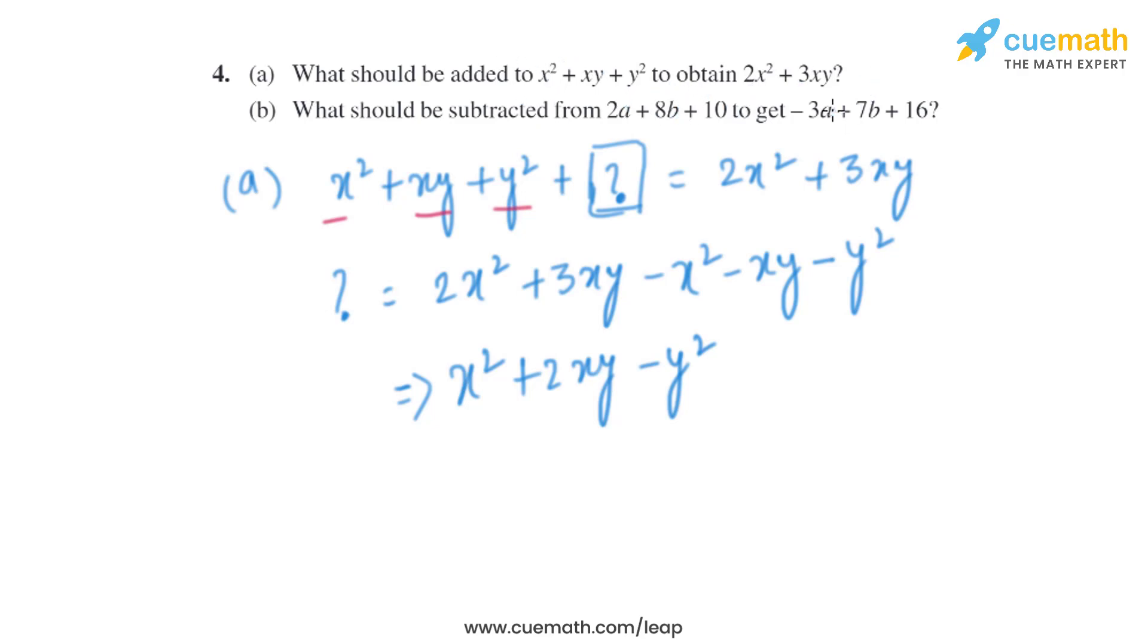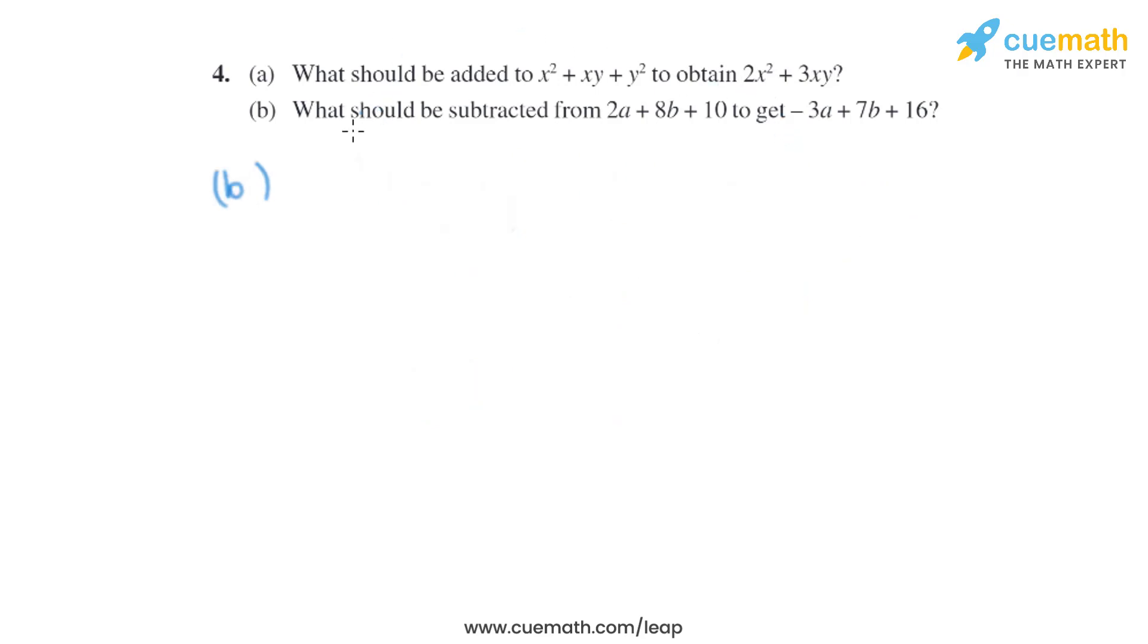Now the part B says what should be subtracted from 2a + 8b + 10 to get -3a + 7b + 16? So let's say that we are subtracting a question mark from there.